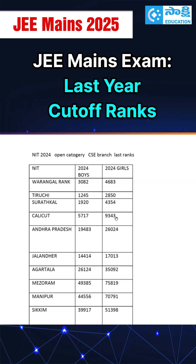For tier two colleges, you need to get a rank below 20,000 — you have to remember that. For example, Andhra Pradesh NIT had a cutoff of 19,480 and Jalandhar at 14,400. All these are second tier colleges.